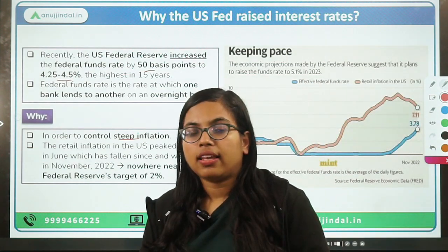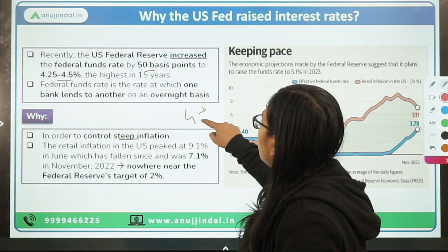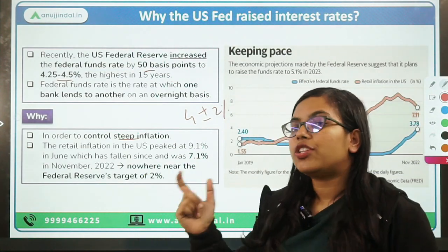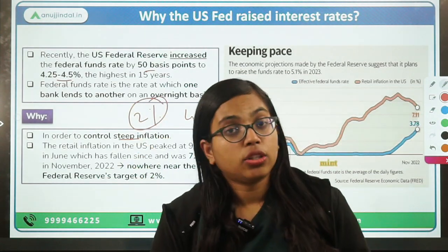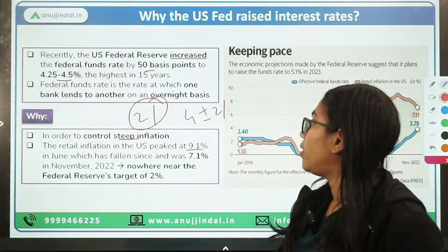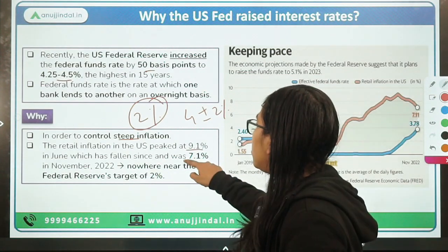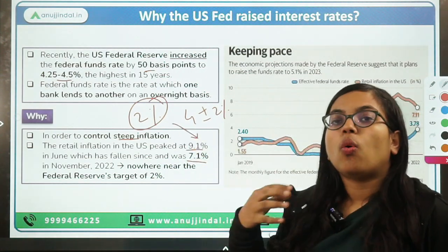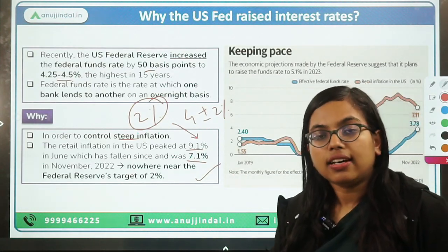If we talk about the US economy, like India has a target of inflation at 4 plus or minus 2 percent, in the case of the US, the inflation target is just 2 percent. But if we look at the inflation figure for the US economy — the developed economy — in the month of June it was at 9.1 percent, which was the highest. And recently in the month of November it was around 7.1 percent. You can see the vast divergence between what is expected as a target and what they are actually facing.